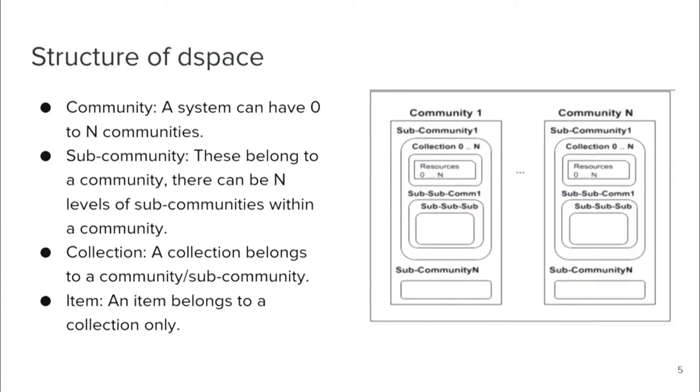Now the structure of DSpace — how files are stored in the repository. DSpace has communities; a system can have zero to n communities, and each community can have sub-communities to n levels. Any community or sub-community can have collections. Collections contain items, and each item belongs to a single collection. That item is our resource — it can be a video link, the video itself, or a PDF.